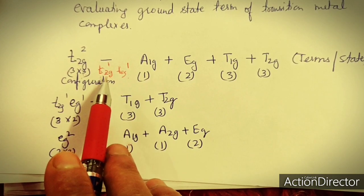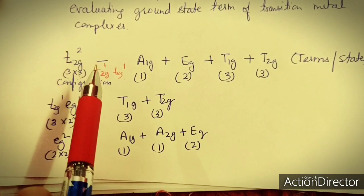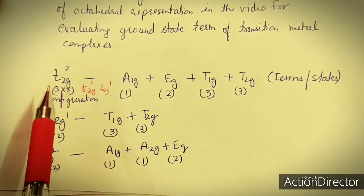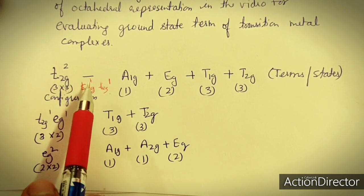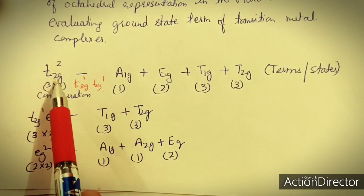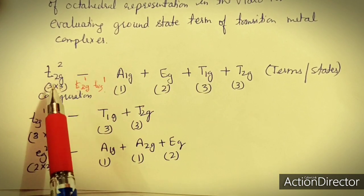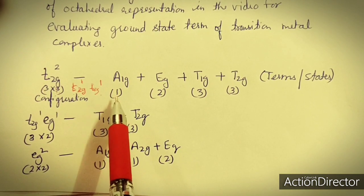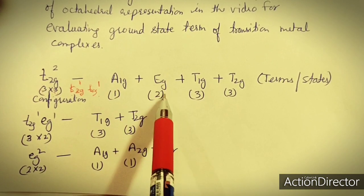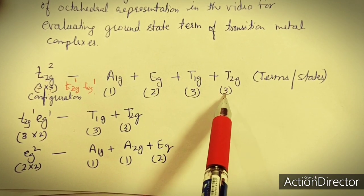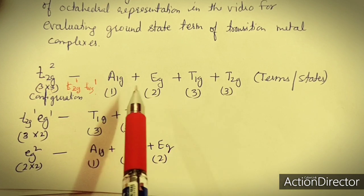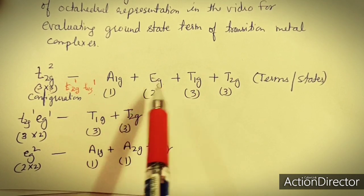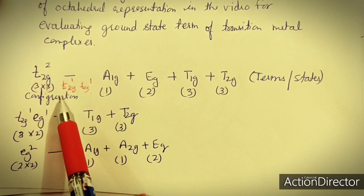The degeneracy of the generating T2G² configuration equals nine, which matches the sum of degeneracies of A1G + EG + T1G + T2G. For the first excited state T2G¹EG¹: T2G has three degeneracy and EG has two, giving total degeneracy of six. Its product is T1G + T2G — each with degeneracy three — totaling six. For EG²: one EG has degeneracy two and the other two, so total degeneracy is four. Their product is A1G + A2G + EG, with degeneracies 1+1+2=4.